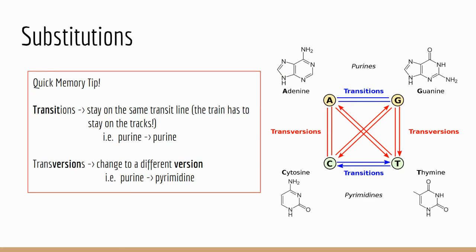More specifically, we have transitions and transversions. We use these terms to indicate what is changing to what. We know that we have two types of nucleotides: purines and pyrimidines. Here's how I think about it — transitions: you look at the word and you see the word "transit," so you stay on the same transit line. Transitions are where you change from a purine to a purine, or a pyrimidine to a pyrimidine. Transversions, on the other hand, are where you change to a different version of nucleotide — from a purine to a pyrimidine, or vice versa.